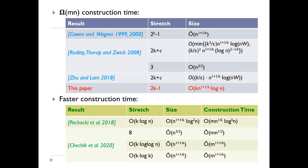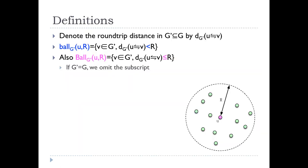These results have construction times of about O(mn). However, recently there are many results considering faster construction time, where the construction time is better than O(mn) with the stretch a little bit larger. We denote the round-trip distance in a subgraph G' by the appropriate notation, and define the ball in G' from U with radius R to be the set of vertices V in G' such that the round-trip distance between U and V in G' is less than R.